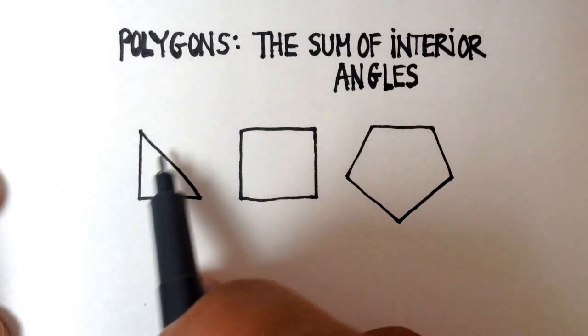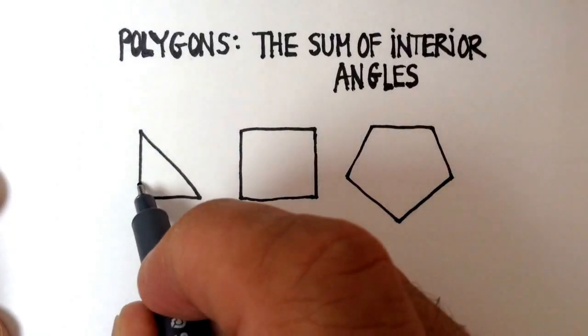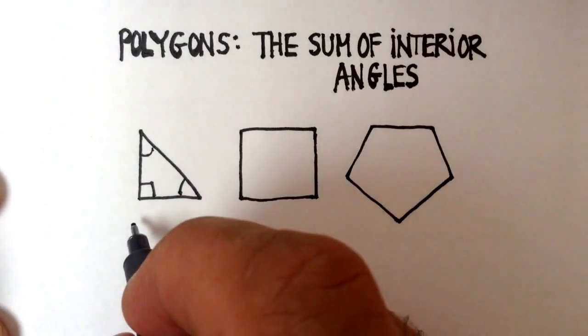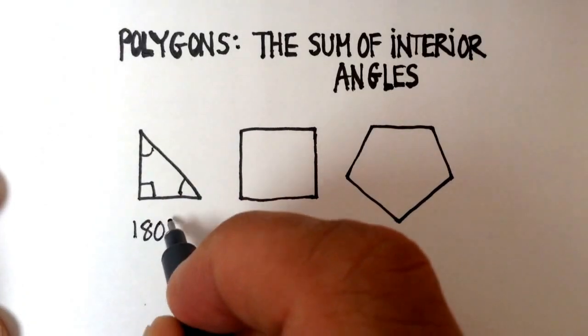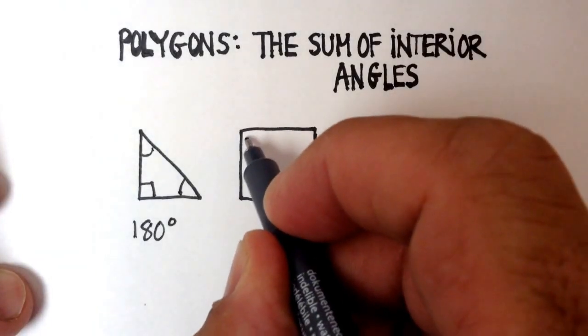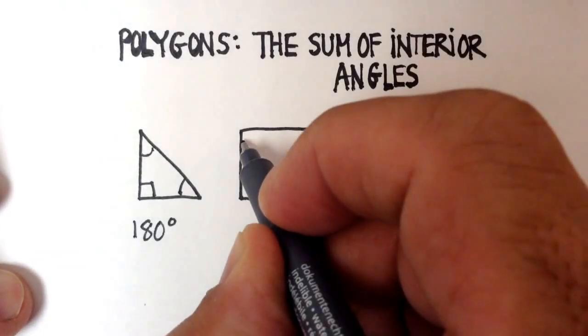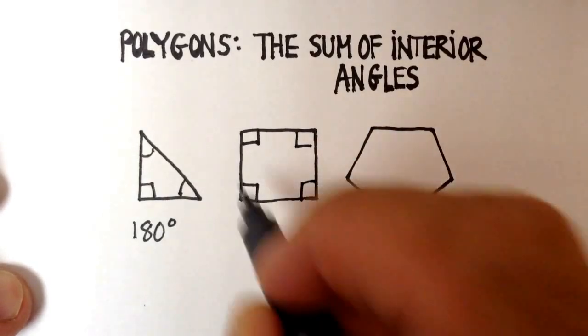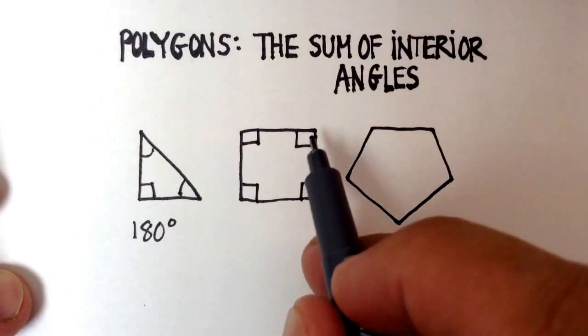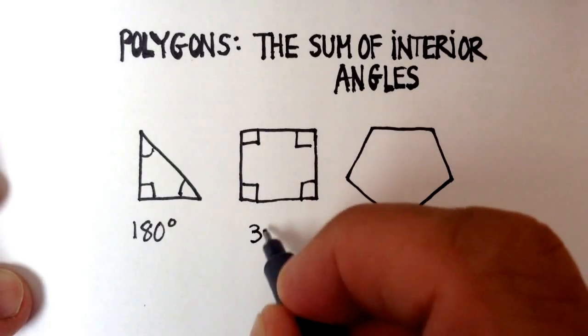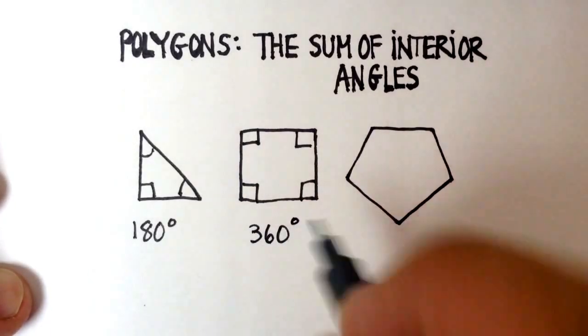Most people know that the interior angles, so these angles here, in a triangle all add up to 180 degrees. And most people also know that when you have a square, for example, you have four right angles, and each of those angles is 90 degrees, so it's four times 90 or 360 degrees.